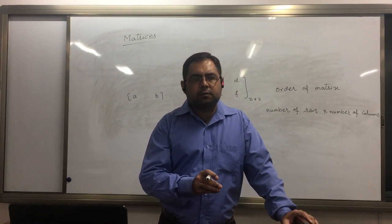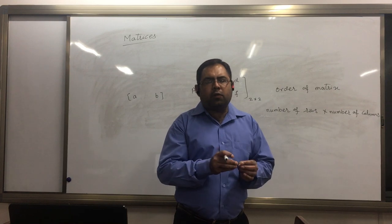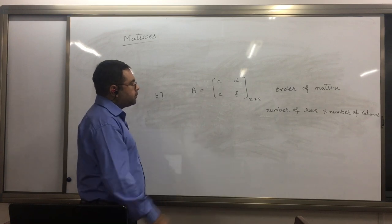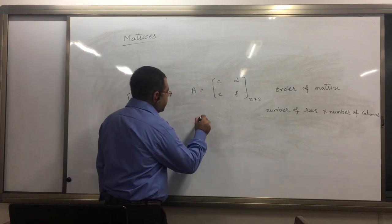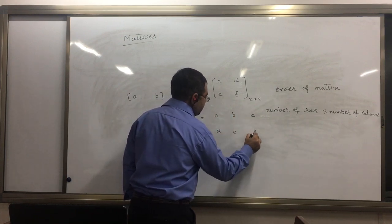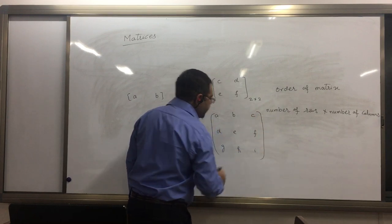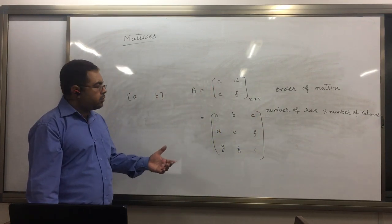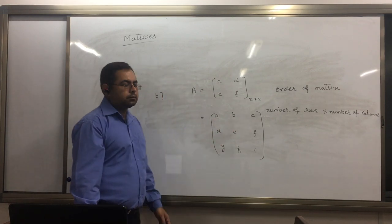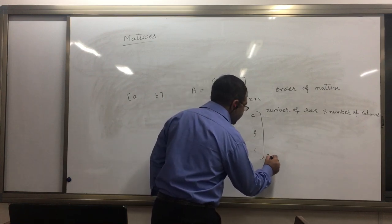You can say that a square matrix is that matrix which has the same number of rows and same number of columns. Let's say if we have a square matrix like this. This is also called a square matrix. Why? Because this has the same number of rows and same number of columns. This has three rows and three columns, so this is also called a square matrix.